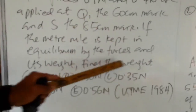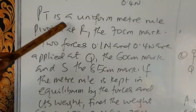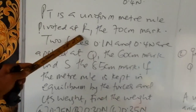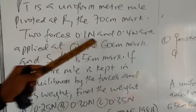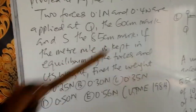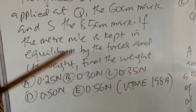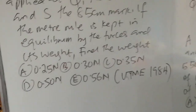Two forces, 0.1 and 0.4 Newton, are applied at Q, the 60cm mark, and S, the 85cm mark. If the meter rule is kept in equilibrium by the forces and its weight, find the weight. BT is a uniform meter rule pivoted at R, the 70cm mark. Two forces 0.1 Newton and 0.4 Newton applied at Q, the 60cm, and S, the 85cm mark. Find the weight.